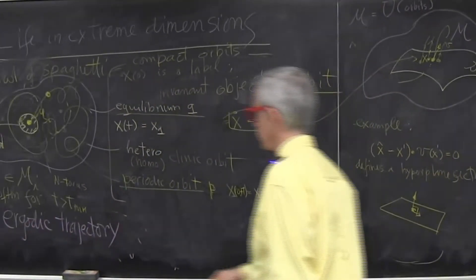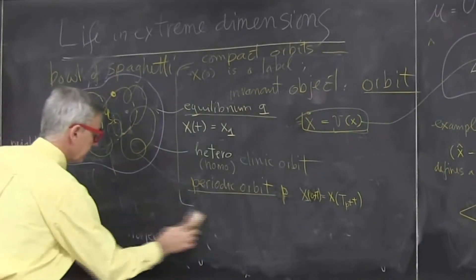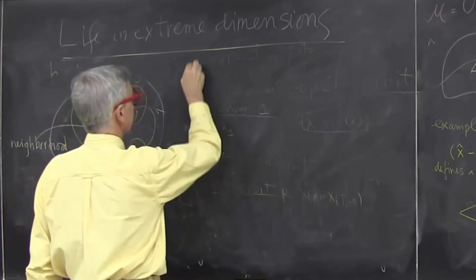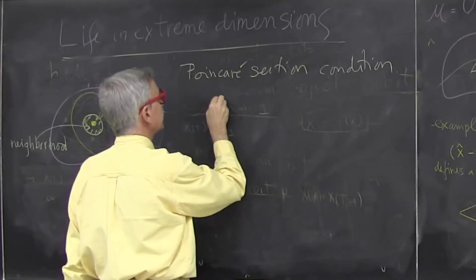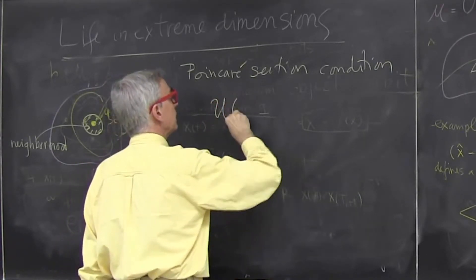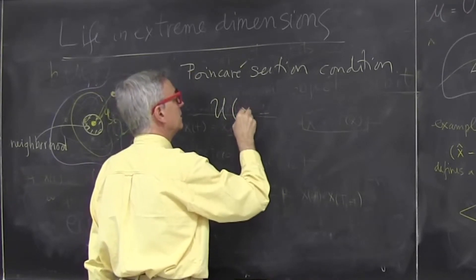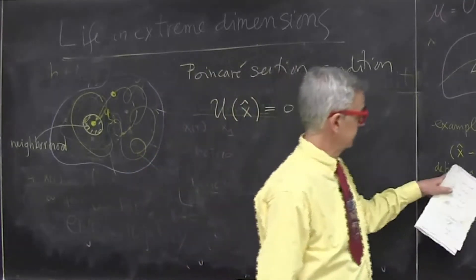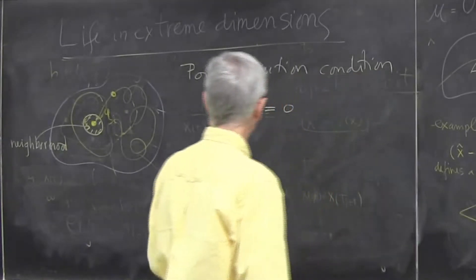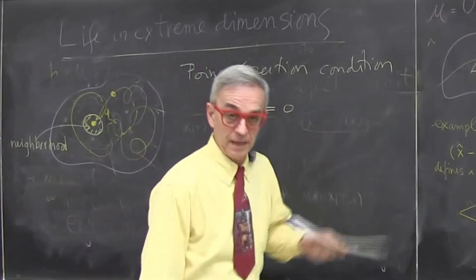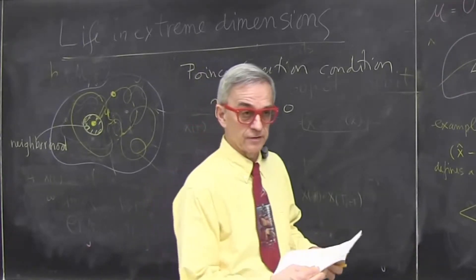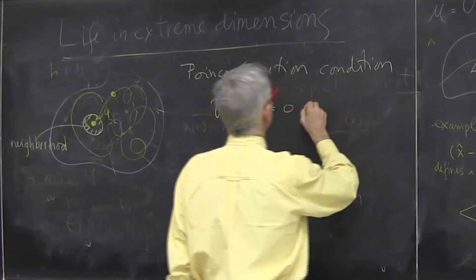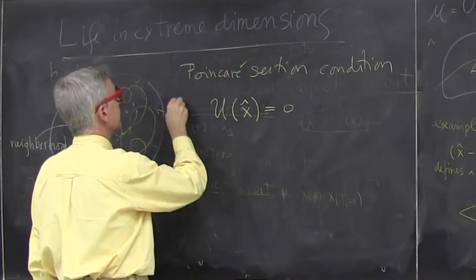Now, a more correct definition is to say the way I get to this co-dimension one space is to put one condition. So I will accept points on each spaghetti only if x something is zero. This is the simplest example. So that gives me one condition. So the space that remains is one dimension less than the original space. It's co-dimension one. That defines points in Poincaré section.